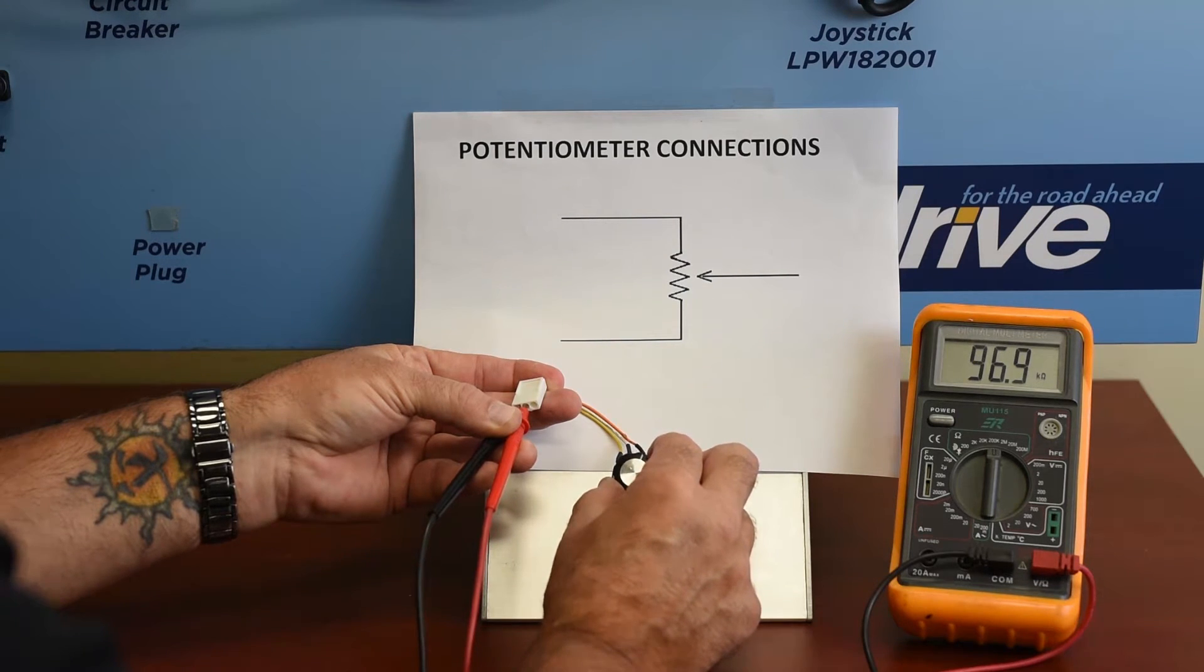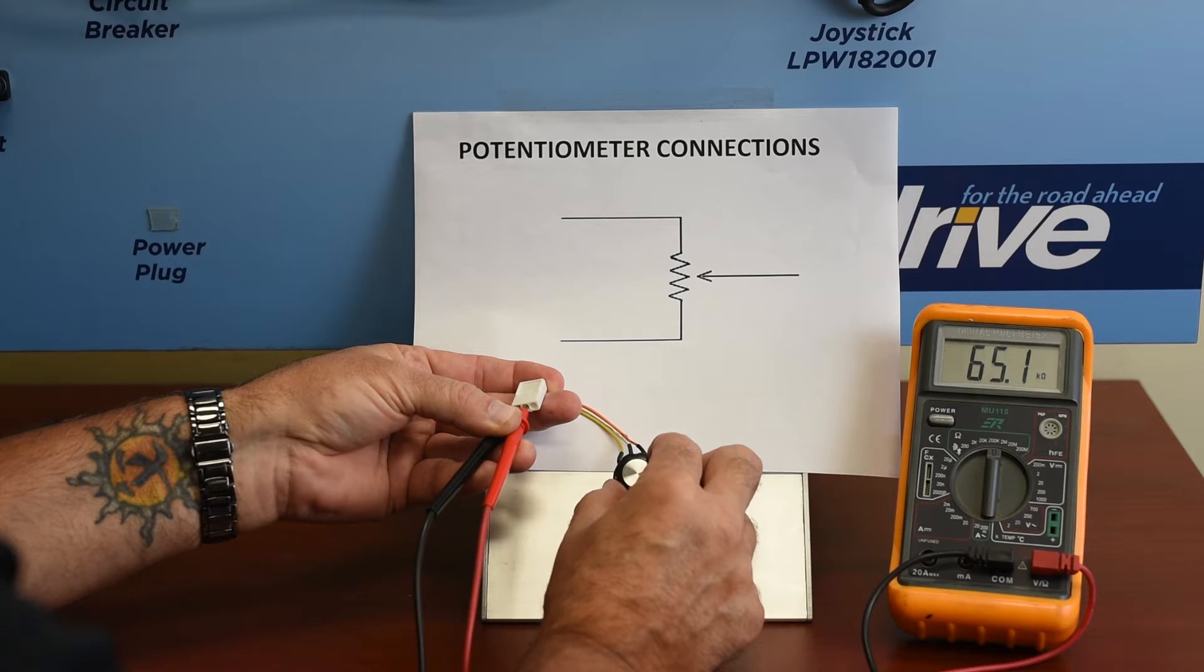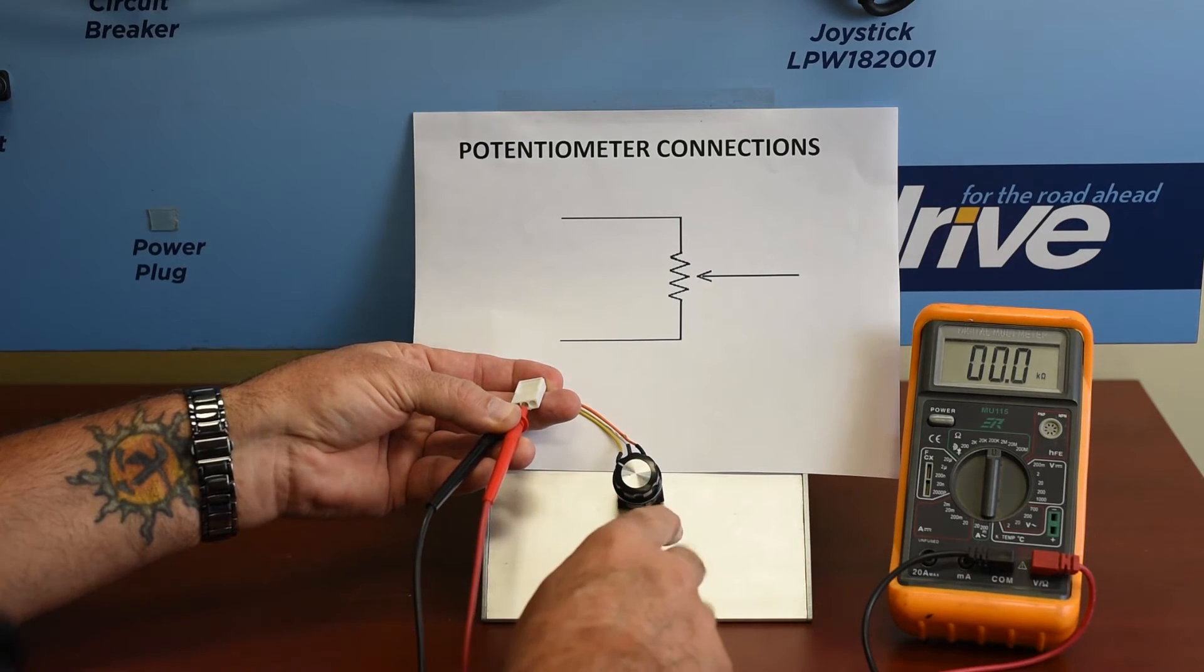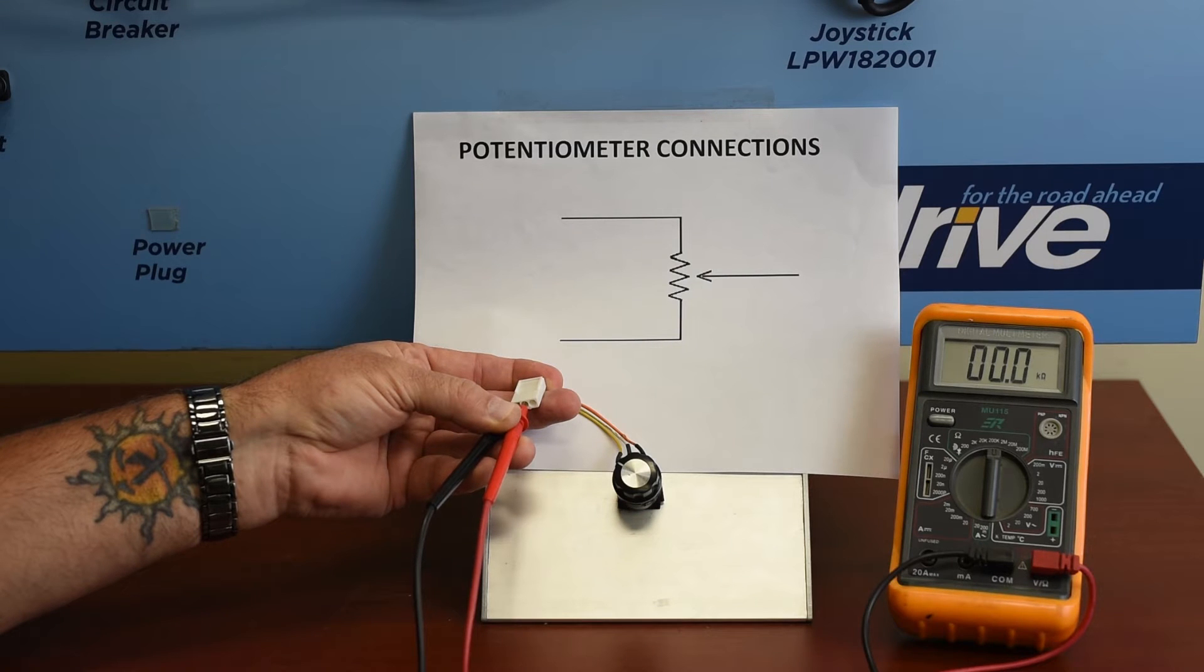So, we slowly rotate the knob, and you see it decreasing very slowly. And we're finding that this is looking real good. We're almost there, and now we're at the other full swing, and we're down to zero ohms.